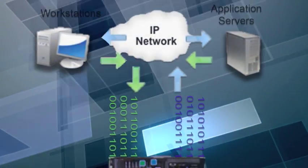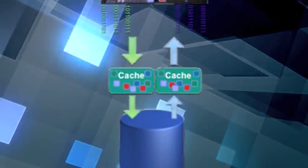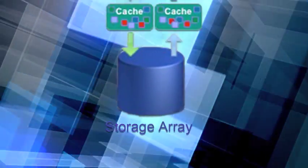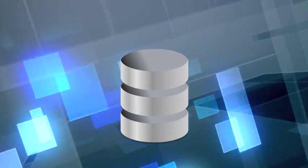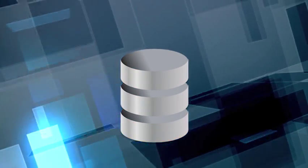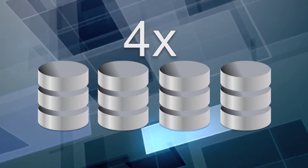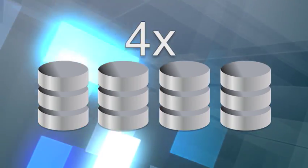By compressing data before it gets to the storage device, you lower disk utilization. Because the data is transparent, whatever the compression ratio is on disk is also the factor by which your storage cache increases.